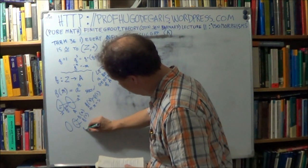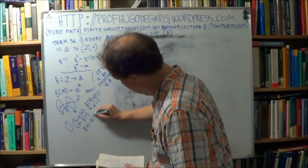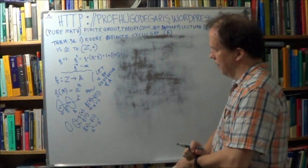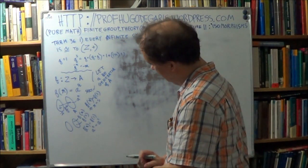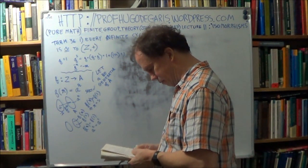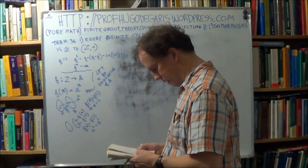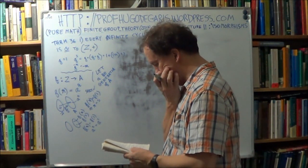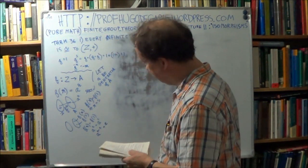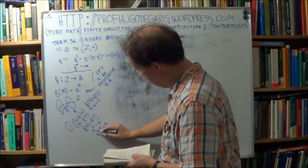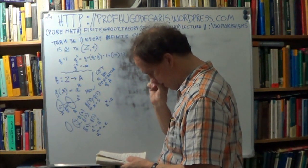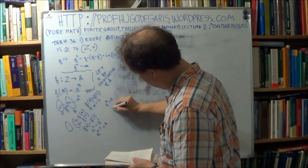So you start with f of r equals f of s. That's the same as a^r equals a^s, and what are we trying to prove? We're trying to prove that r and s are equal, and how do you prove that? All right, so you can rewrite this as r minus s is e, okay, and if a to the n is e,